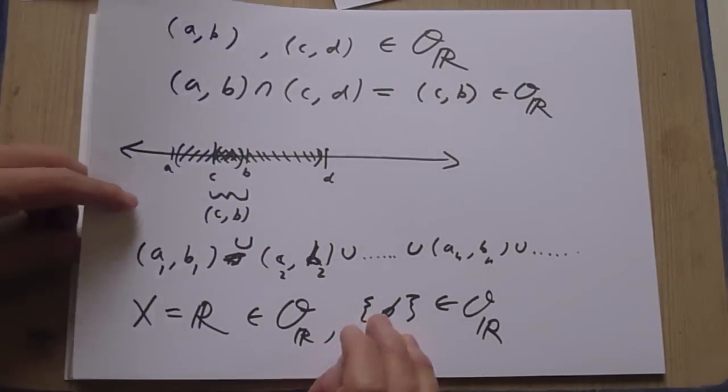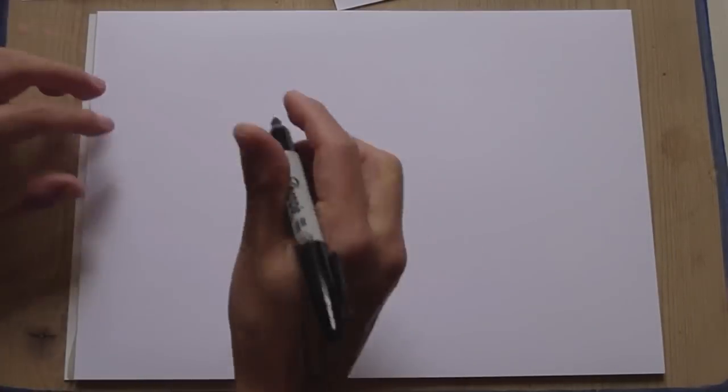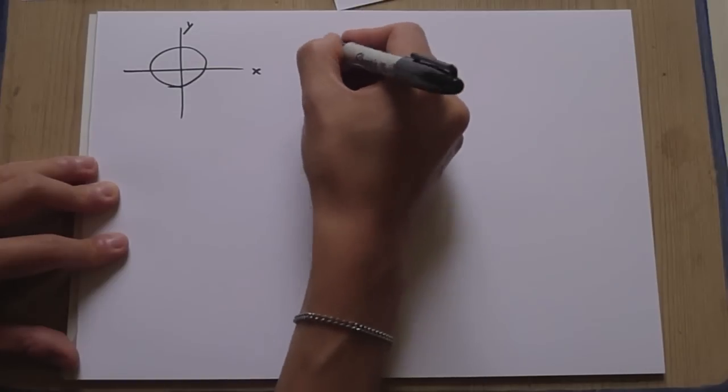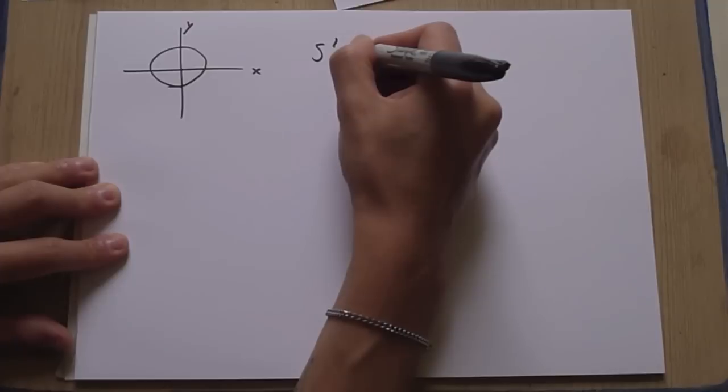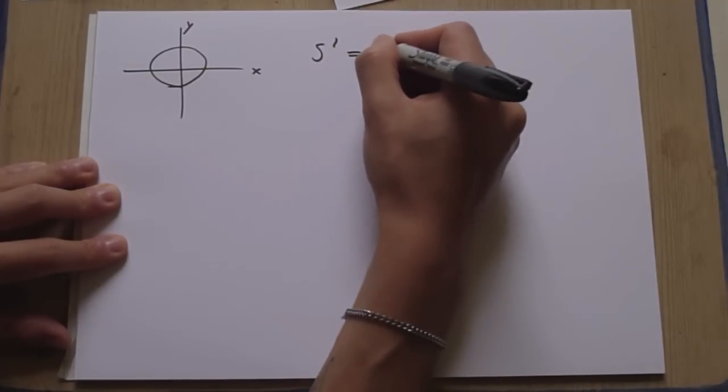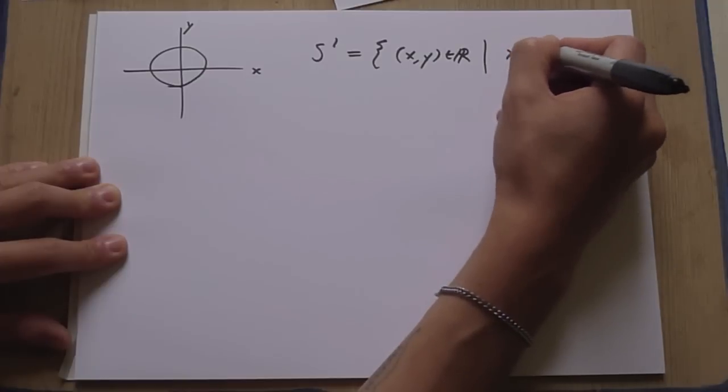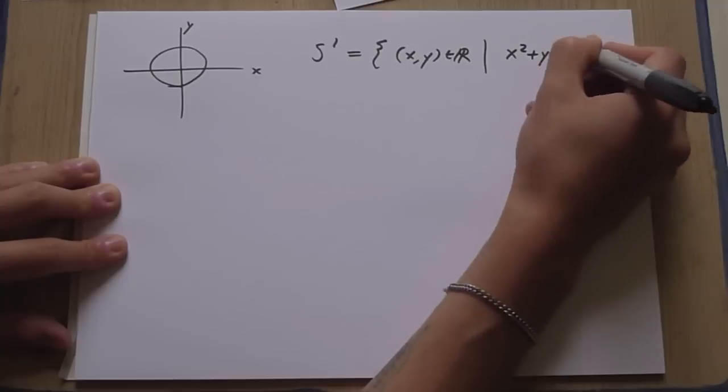Another topology, another space we could consider is the circle. And the circle, which we'll call S1, is equal to the set of points in the plane such that X squared plus Y squared is equal to 1.